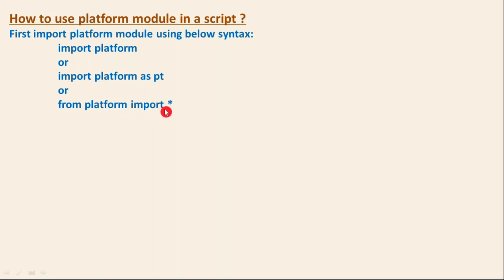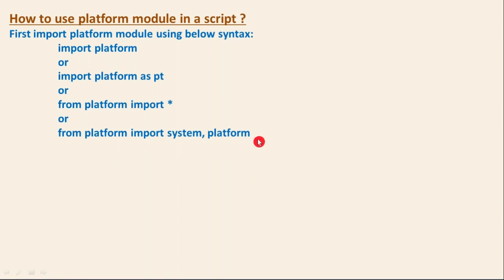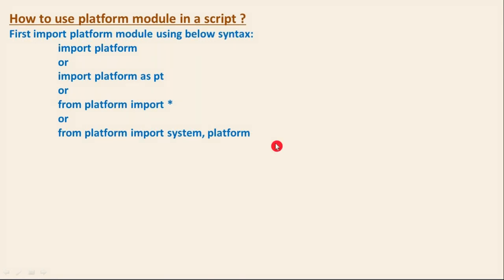Another way is 'from platform import *', which imports all functions and variables directly. A module is simply a Python script consisting of functions, classes, and variables. You can also selectively import only what you need — for example, 'from platform import system, platform' if those are the only two functions required. As a beginner, try to start with the basic import first.